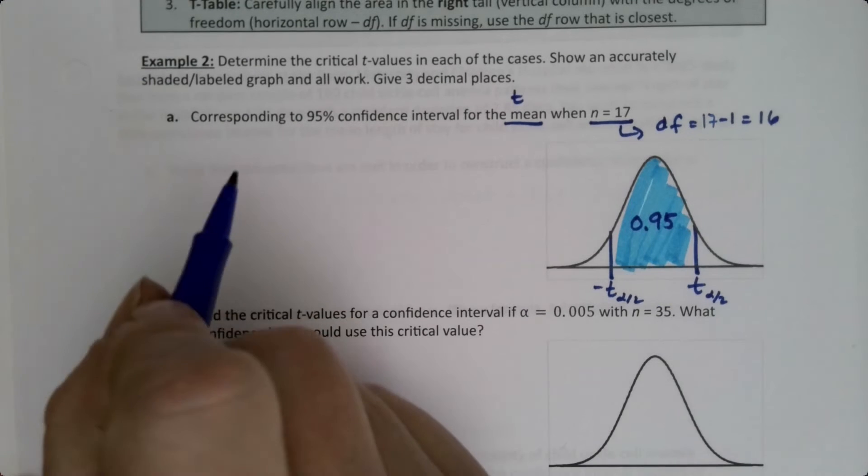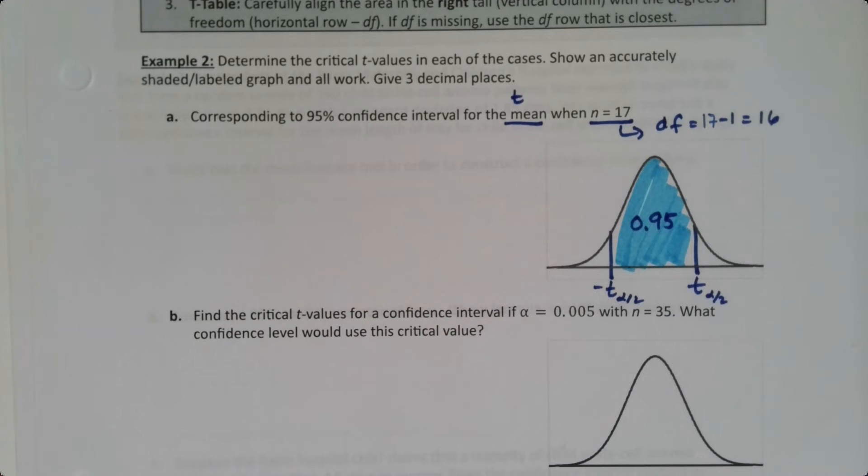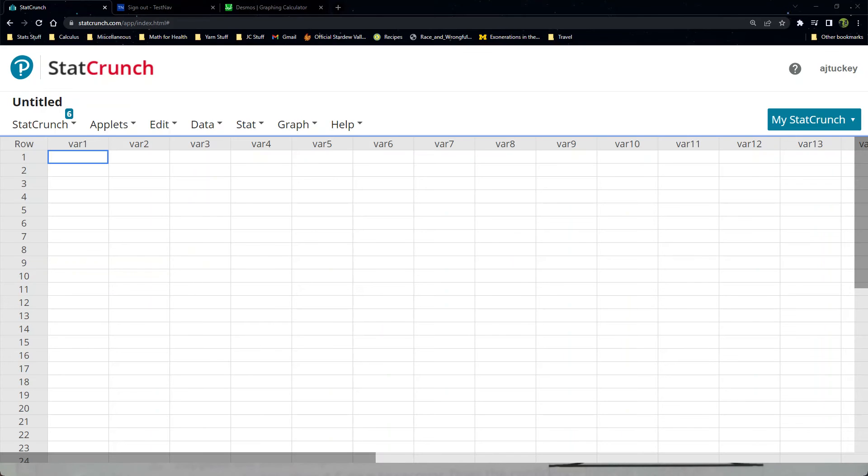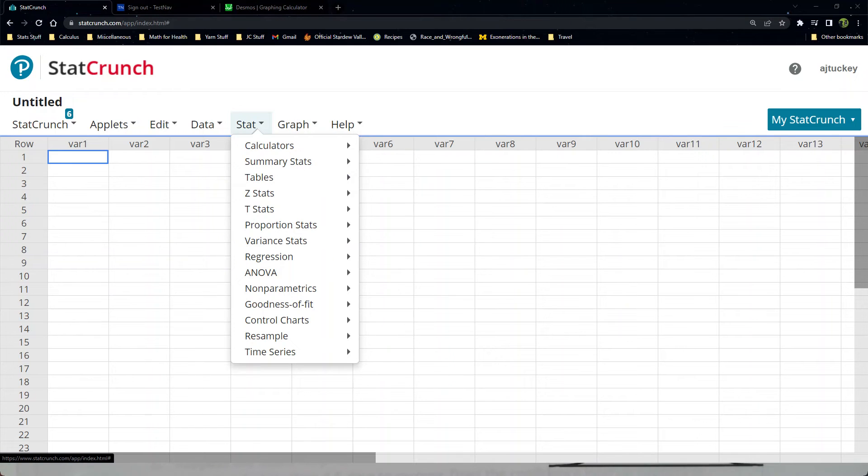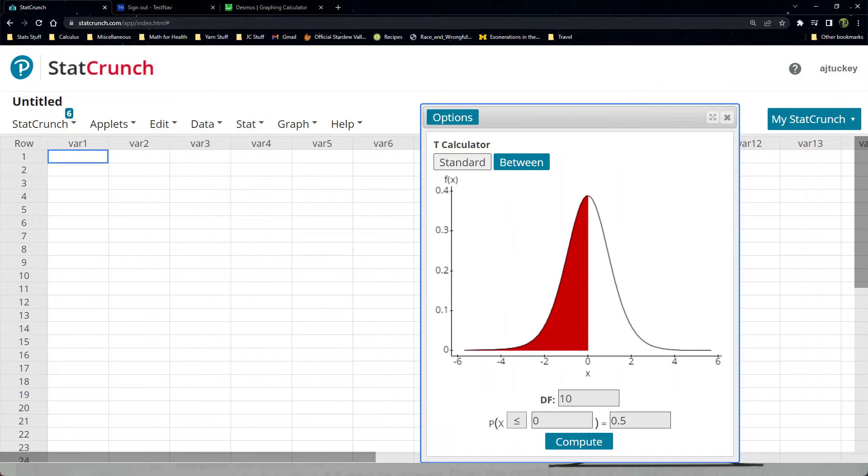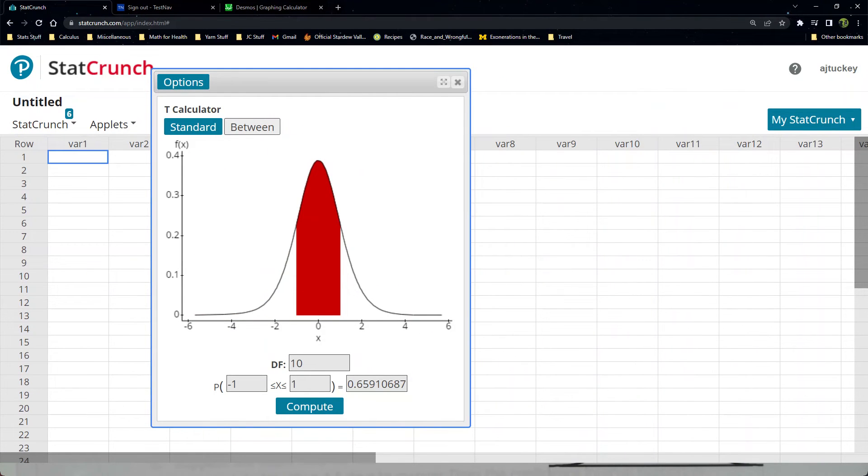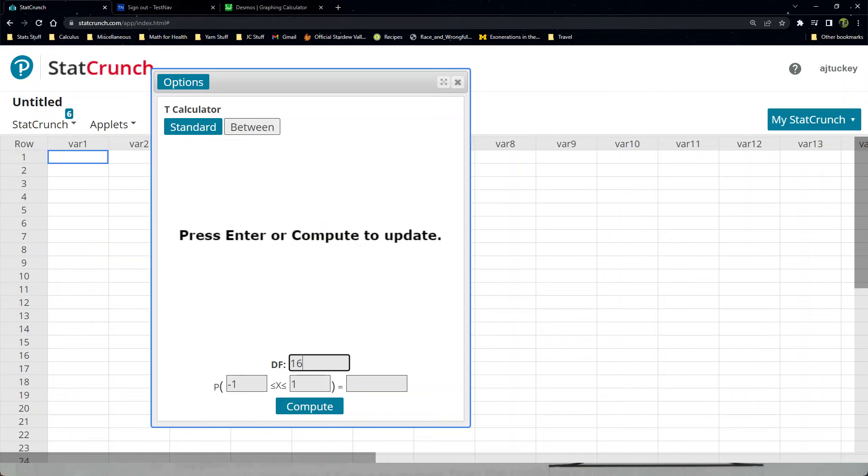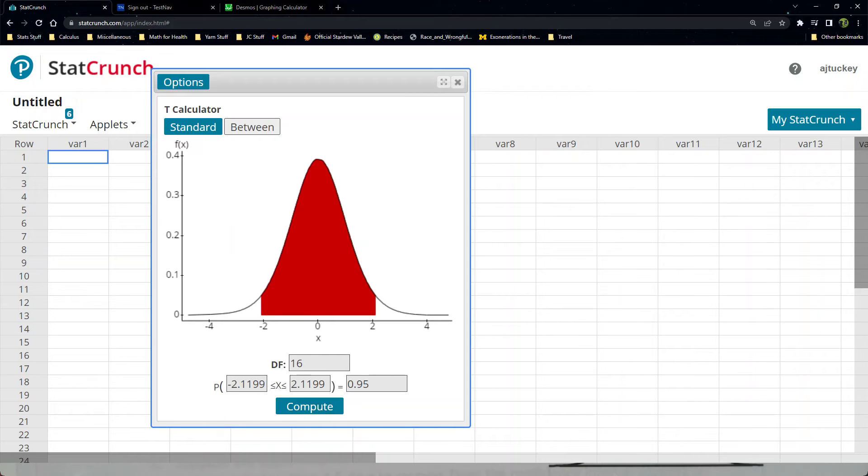Alright, so we just need to go to StatCrunch now. So let me grab StatCrunch. In StatCrunch, we want to go to Stat, Calculators, T. It's almost at the bottom. So click T. Then, of course, we want between, because we're looking for two values and we want a central portion to be shaded. We have to tell it the degrees of freedom. So the degrees of freedom is 16. And then we put the area in, which is .95, and say compute. And there it is.